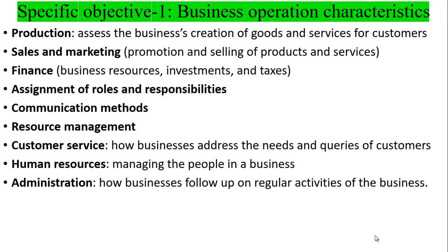You can also study sales and marketing — how micro and small enterprises promote their products and services and how they sell them. Another business operation characteristic is finance: you can study the business resources, investment type, investment size, and sector of investment. You can study finance from different points of view, including the taxes they pay and the tax category — category A, category B, category C — depending on how categories are set in your country.